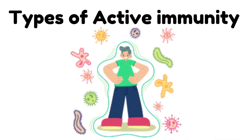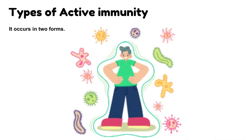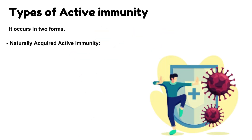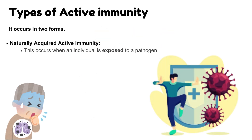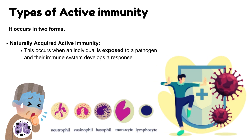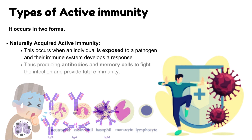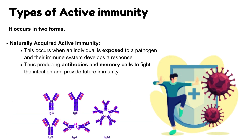Active Immunity occurs in two forms. Naturally Acquired Active Immunity: this occurs when an individual is exposed to a pathogen and their immune system develops a response, producing antibodies and memory cells to fight the infection and provide future immunity.